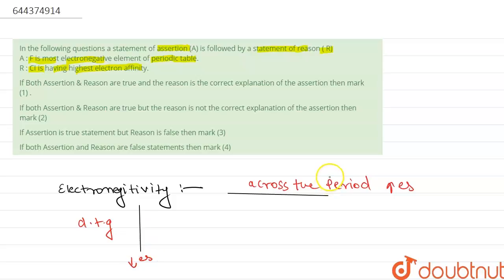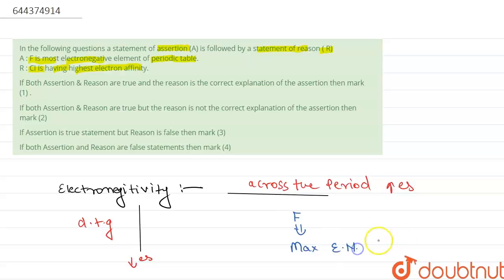While on moving down the group, the electronegativity of an atom decreases. Thus the last elements of a period, excluding noble gases, are the halogens, and the first halogen is fluorine. Therefore fluorine has the maximum electronegativity, approximately equal to 4.0, which is the maximum in the periodic table. So the assertion is true.